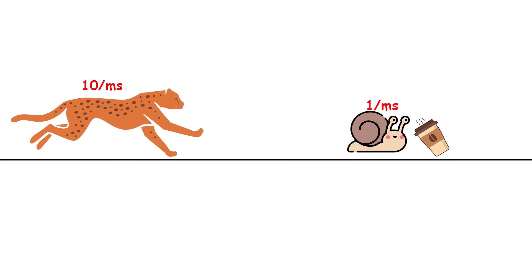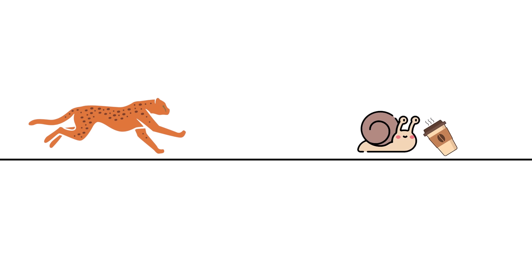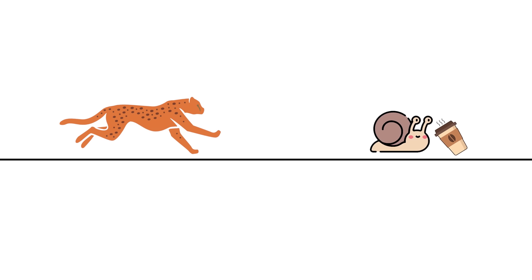Suppose that the cheetah is sprinting at 10 meters per second, that the snail is zooming at 1 meter per second thanks to the espresso shot, and that the snail starts 9 meters ahead of the cheetah. On the face of it, the cheetah should catch the snail after 1 second, at a distance of 10 meters from where it starts, and 1 meter from where the snail starts.